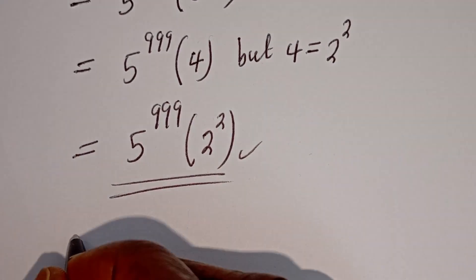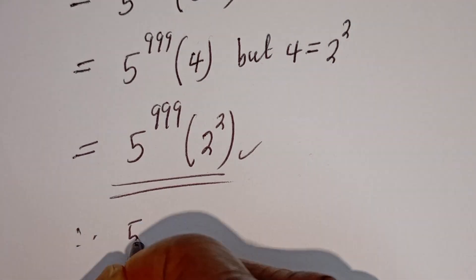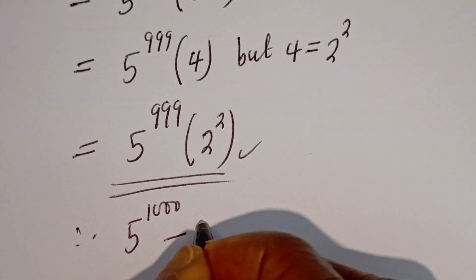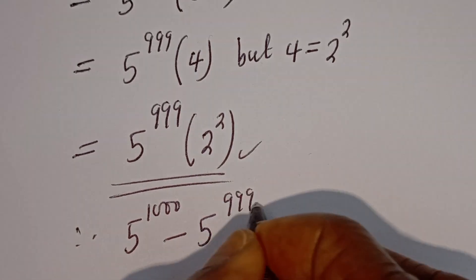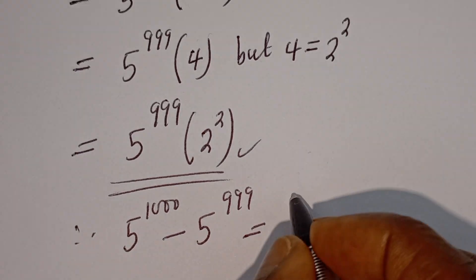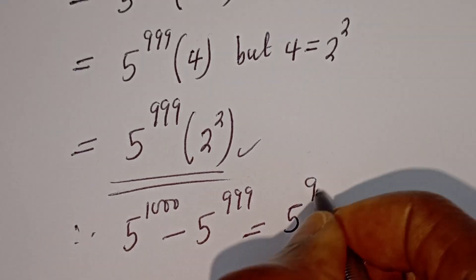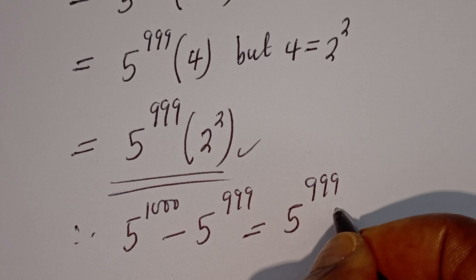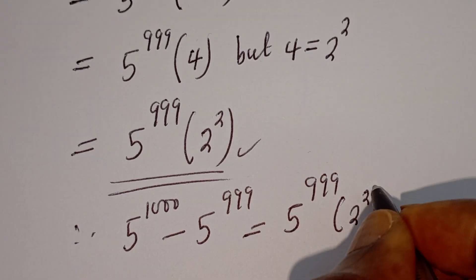Therefore, 5 to the power of 1000 minus 5 to the power of 999 is equal to 5 to the power of 999 multiplied by 2 squared.